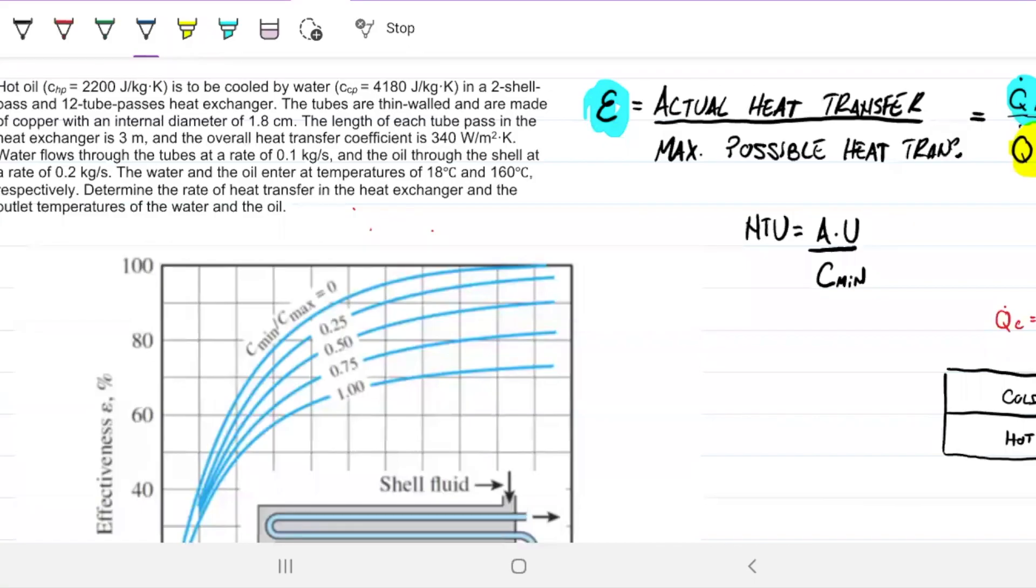Hot oil is to be cooled by water in a two-shell and 12-tube heat exchanger. The tubes are thin-walled and are made of copper with an internal diameter of 1.8 centimeters.